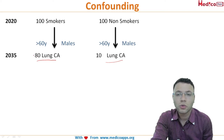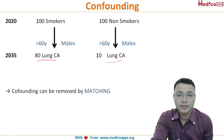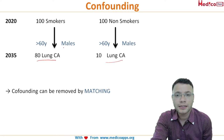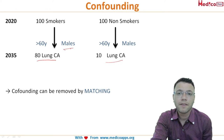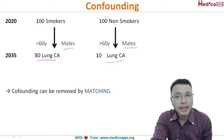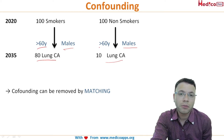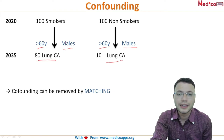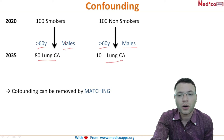The confounding factor here could be males of older age contributing to the high number of cancers. To reduce this, we use matching — we consider how many males are in the study group and match that number in the comparison group. Similarly, if we match age above 60 in both the smoker and non-smoker groups, the confounding effect gets reduced, leaving only the smoking effect.